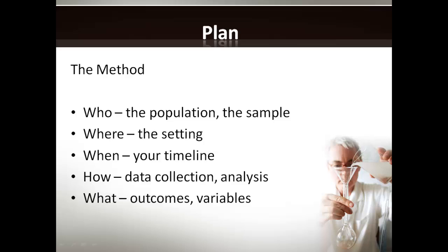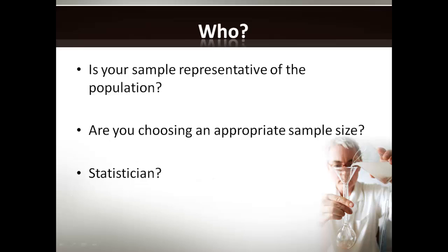We've conceived our research project to a certain degree — we have our question and we've done a literature search. The next step is planning the method. I like to use the following series of questions to answer key points about our method: who, where, when, how, and what. In terms of who, you need to identify who your population is and whether your sample is representative of the population. You also need to ensure that you're choosing an appropriate sample size to ensure your results are statistically significant. If need be, you can get in contact with a statistician to aid you on deciding on the number of participants needed to make your project viable. Sample size is a common area that students find challenging.